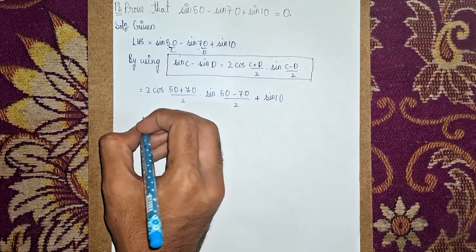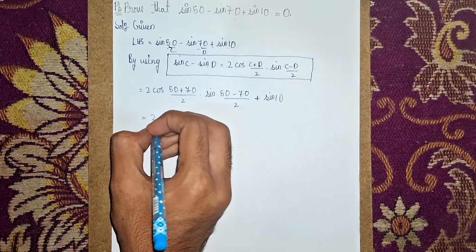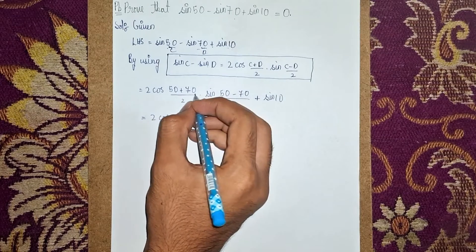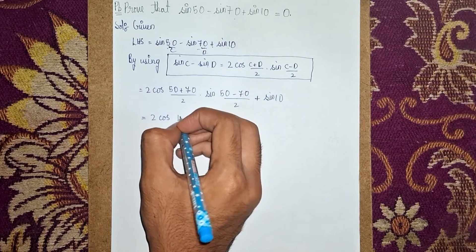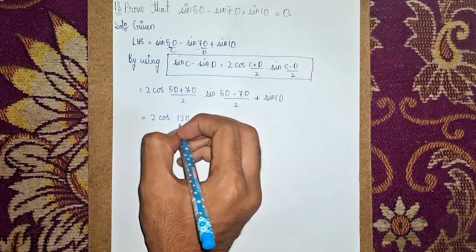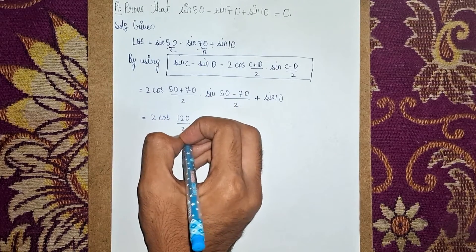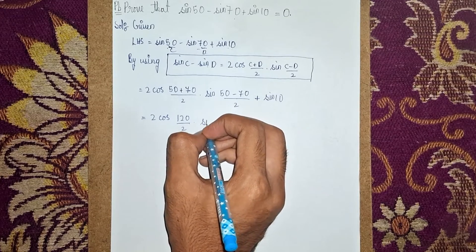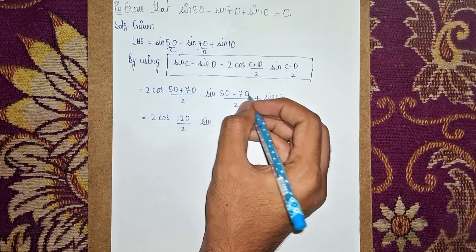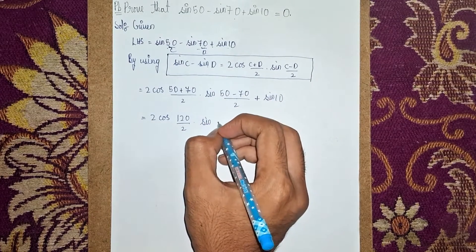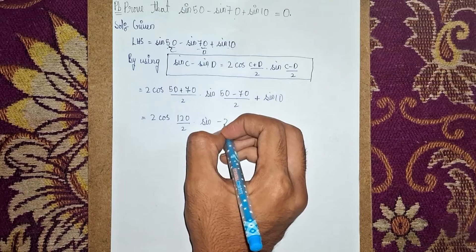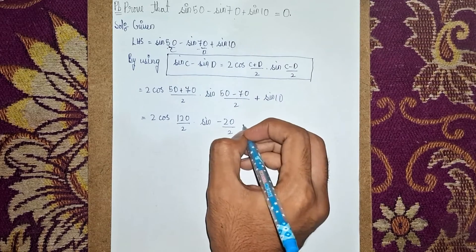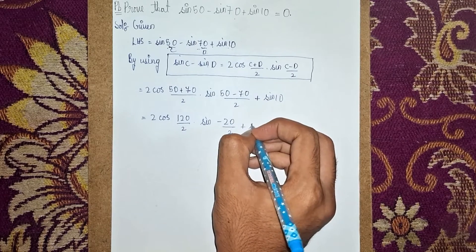Simplifying: 50 plus 70 is 120, so 120 over 2 gives us cos 60. And 50 minus 70 is minus 20, so minus 20 over 2 gives sin(minus 10). Plus sin 10.